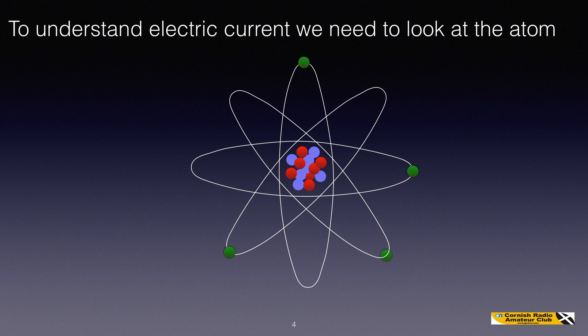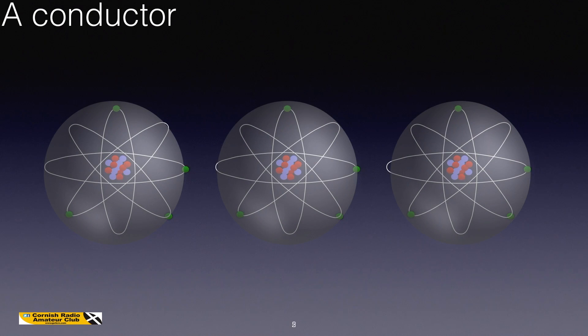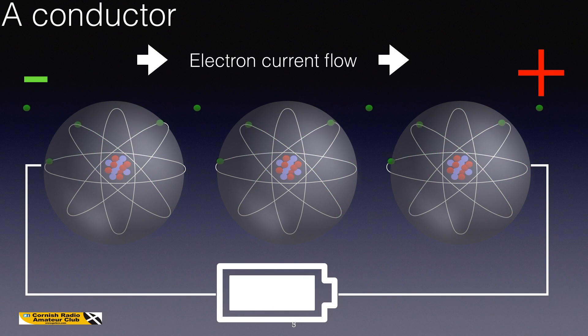To understand electric current we need to look at the atom. The atom has a nucleus which is shown in the centre, and around the nucleus are orbiting negative particles which are electrons. If these atoms are arranged all together in a wire, for example, many of them, far more than this animation shows, which has three here for illustrative purposes, then if we put a potential difference across the wire, the electrons flow from the negative to the positive. It's important to remember that this is electron current flow.